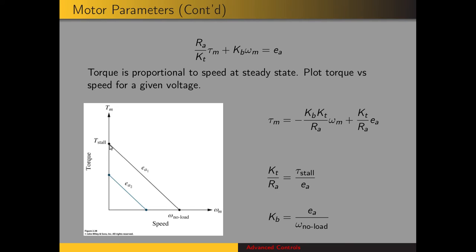From the two ends of the torque-speed curve, we can extract motor parameters. When speed is zero, we solve for the quotient KT/RA as the ratio of stall torque to voltage. When torque is zero, we use the no-load speed and voltage to solve for the voltage constant KB.